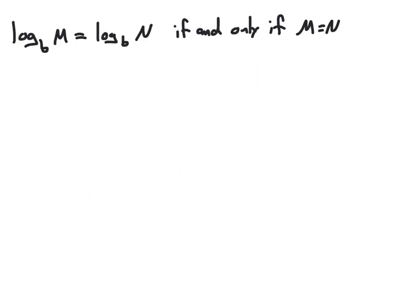Another important property of logarithms is called the one-to-one property. It says that if log base b of M equals log base b of N, then M and N must also be equal. The reverse is true as well — if M and N are equal, then their logarithms are equal. This property is typically used in the forward direction: starting with two equal logarithms and concluding that their arguments are also equal.